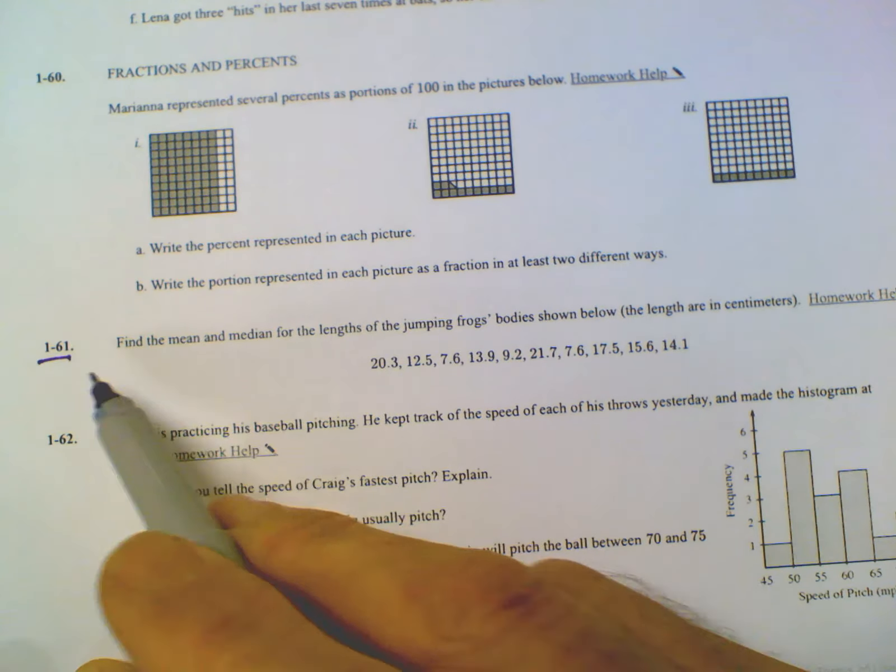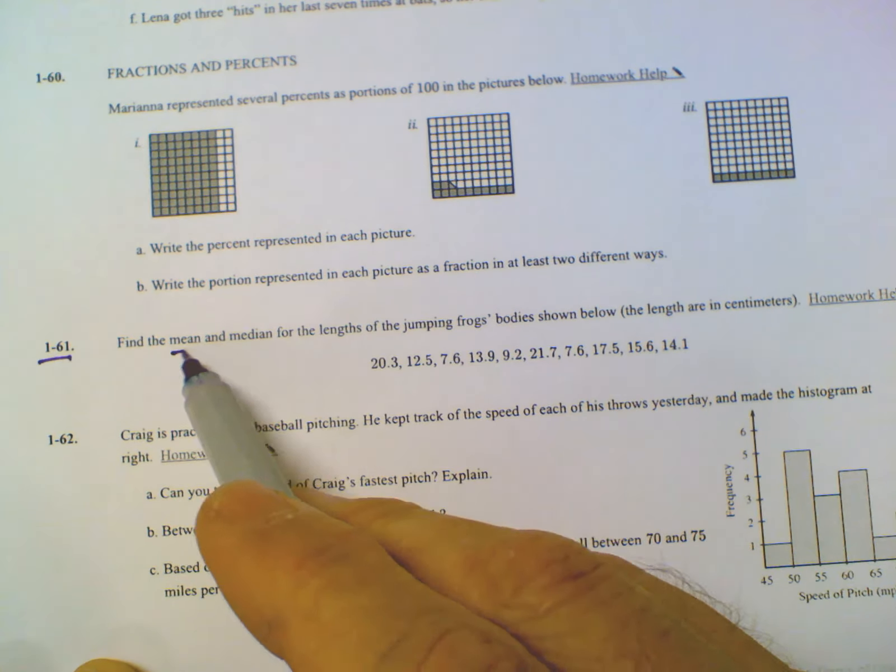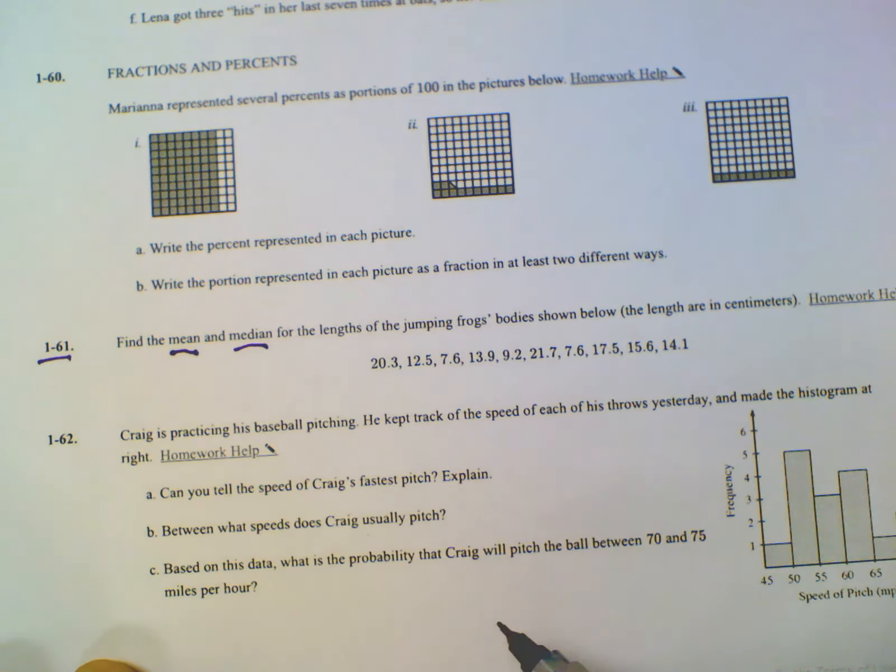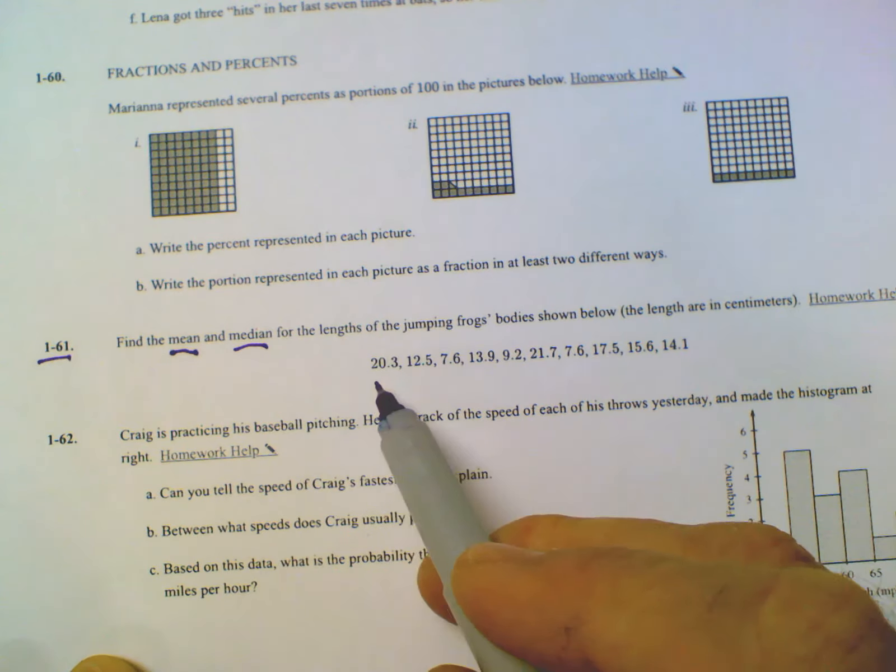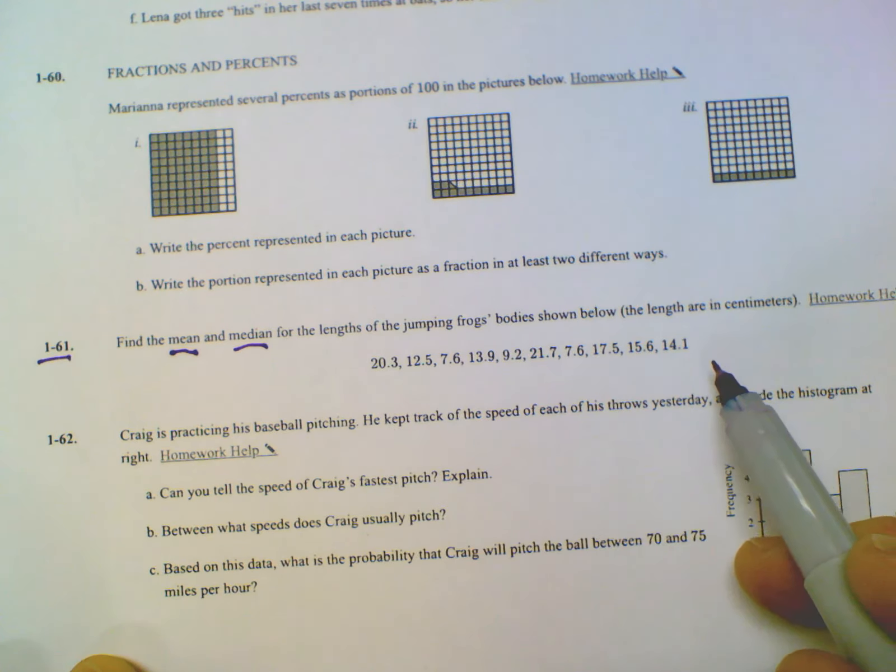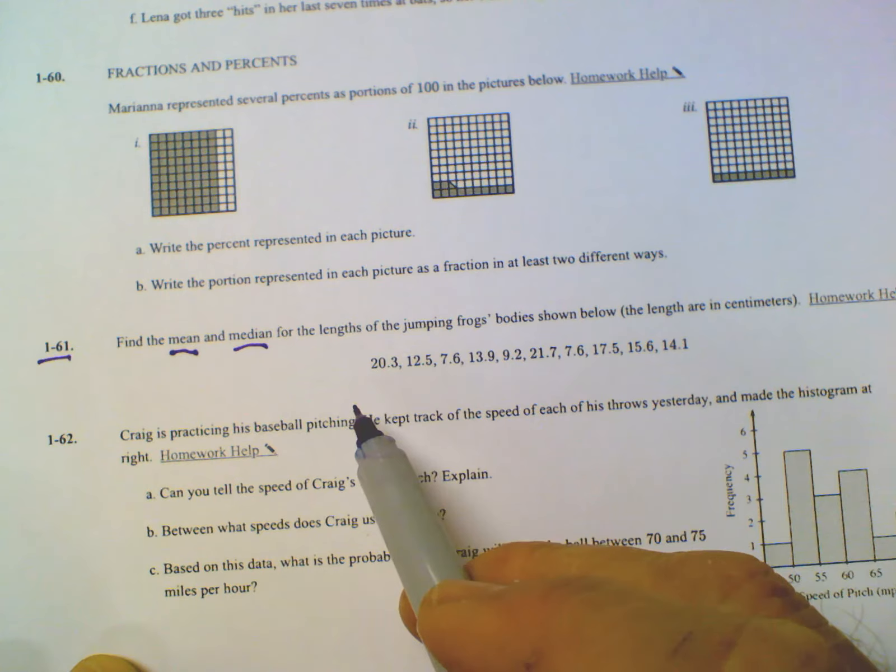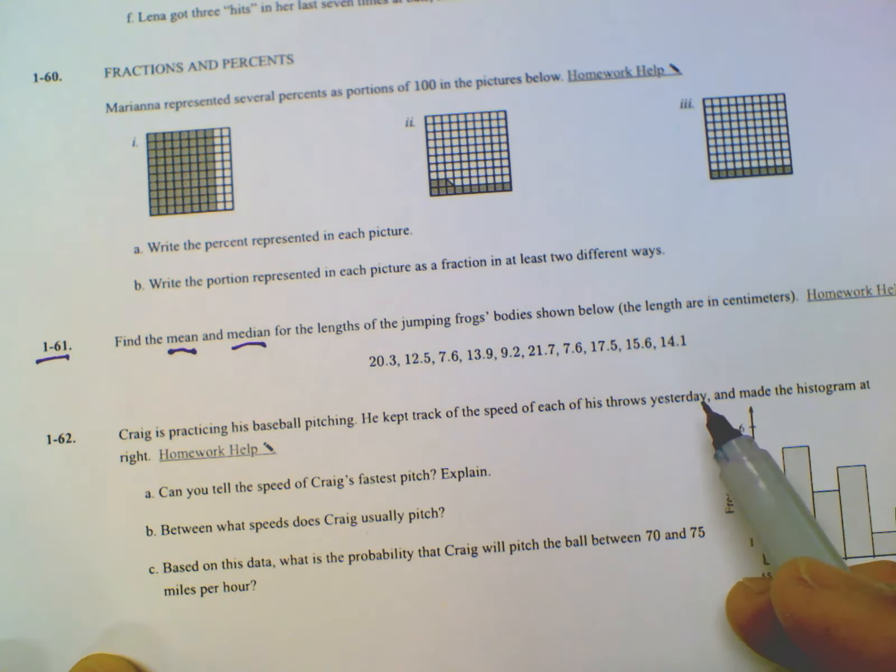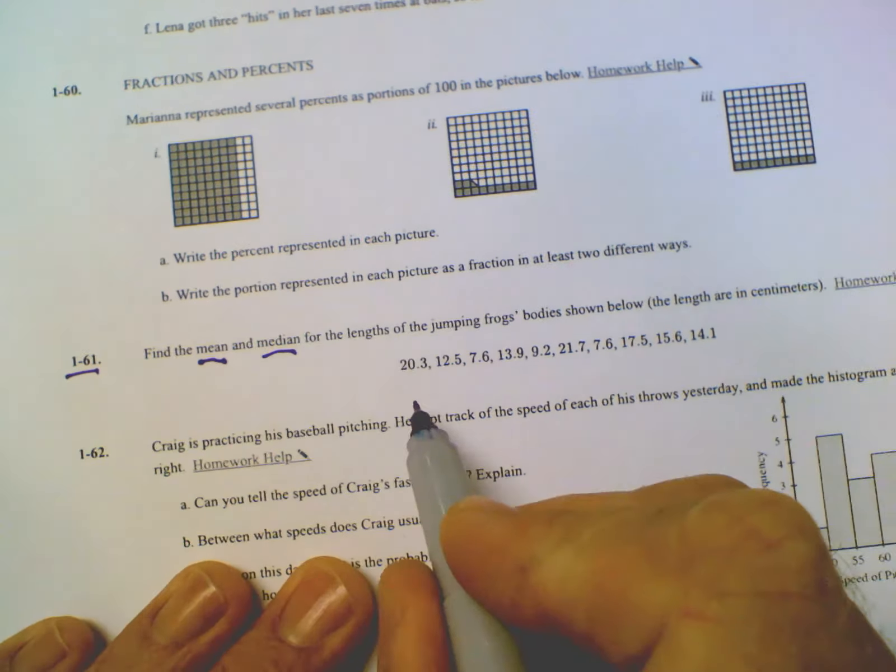And so that question asked us to find the mean and the median. To find the median, just a quick review would be to put the numbers in order from least to greatest and then find the middle, right? So if we were going to do that,